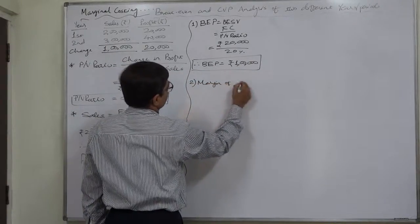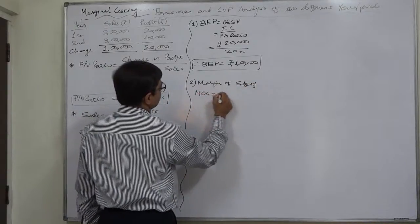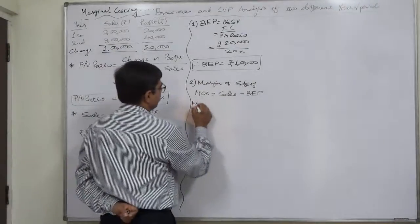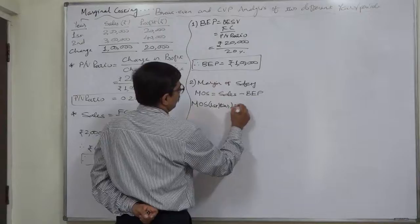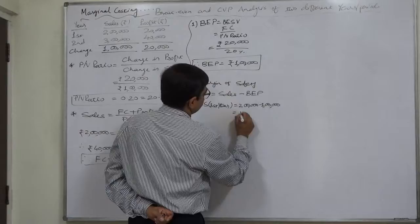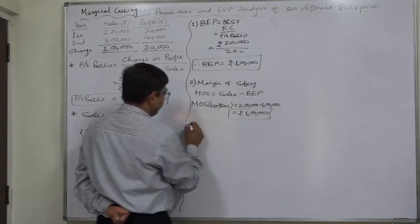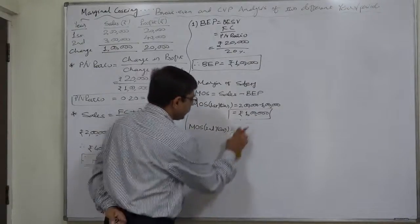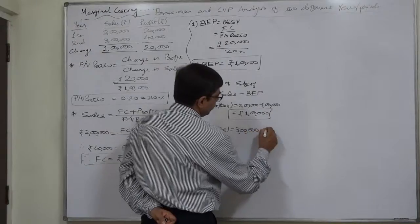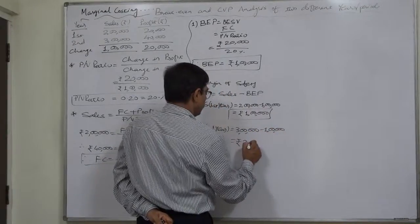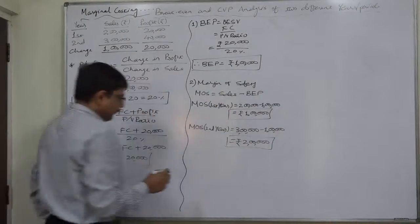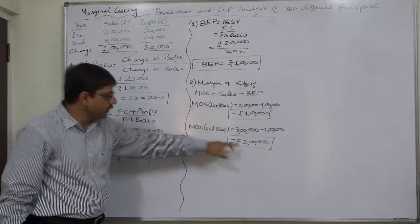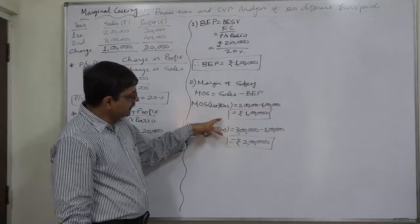Second, margin of safety means sales minus BEP. Since sales have changed, margin of safety for both years will be different. Margin of safety for year one: Rs. 2,00,000 sales minus Rs. 1,00,000 BEP equals Rs. 1,00,000. Margin of safety for year two: Rs. 3,00,000 minus Rs. 1,00,000 BEP equals Rs. 2,00,000. We can reconcile: 1 lakh × 20% = Rs. 20,000 profit; 2 lakh × 20% = Rs. 40,000 profit. Both margins of safety are correct.